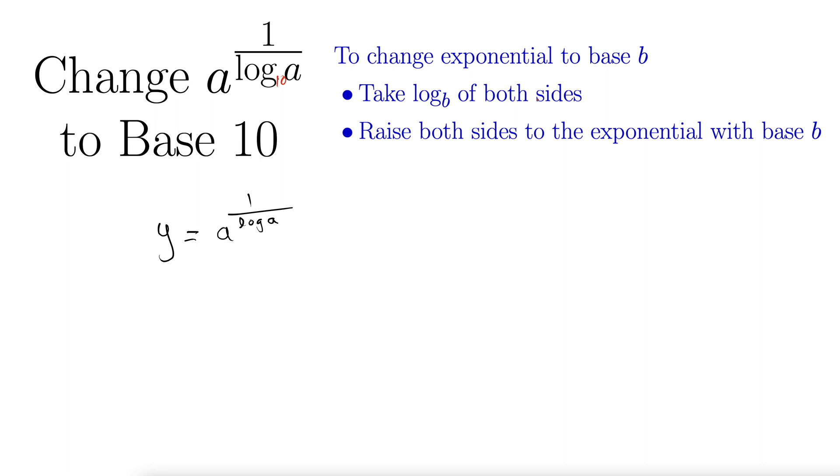It says take log base b of both sides. Here we want to change the exponential to base b. We want base 10, so we're going to take the common log of both sides.